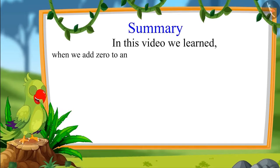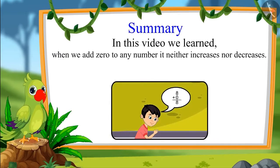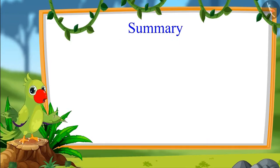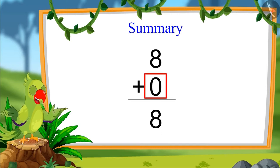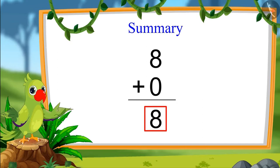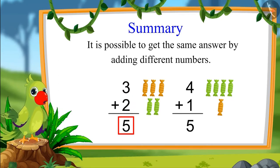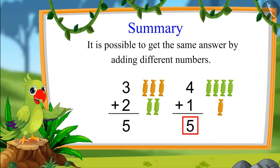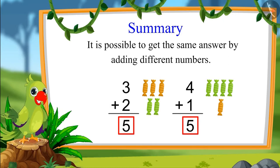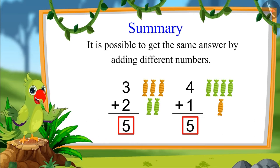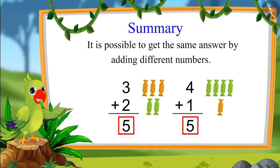So children, in this video we learnt that when we add zero to any number, it neither increases nor decreases. For example, when we added zero to eight, the total remained eight. We also saw that it is possible to get the same answer by adding different numbers. For example, when we add three and two, we get five, and when we add four and one, we still get five. I hope children that through this video you have learned how to add numbers in an organized way. We had a lot of fun today. We will meet again and learn something new. Until then, bye-bye children.